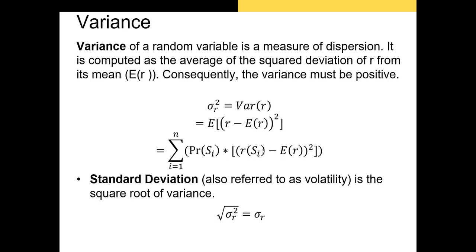Essentially, we're just taking the return in each state of the economy minus the expected return, squaring it, multiplying it by the probability of each state of the economy. Now the standard deviation, which we'll also refer to as volatility, is just the square root of the variance. So sigma is just going to be our notation for standard deviation.